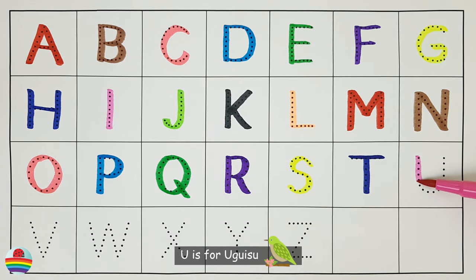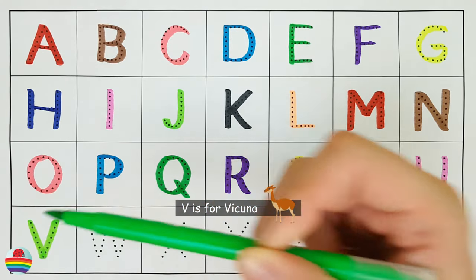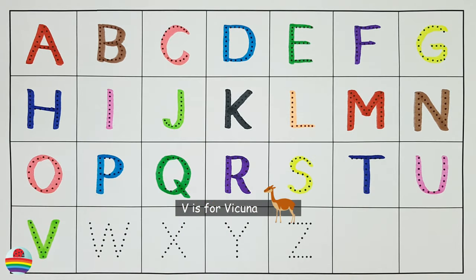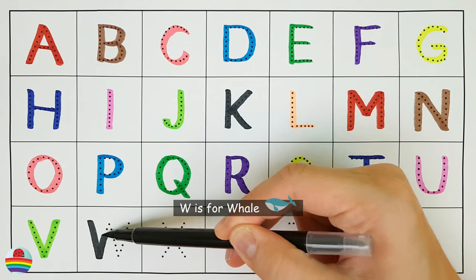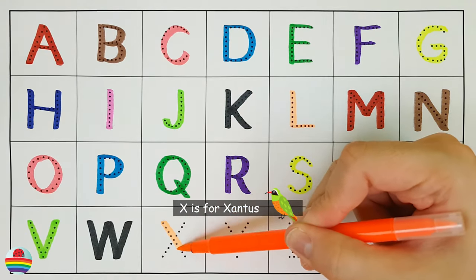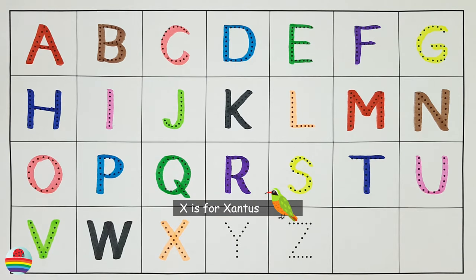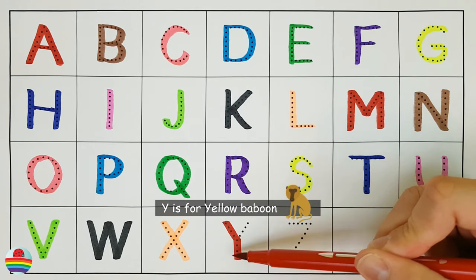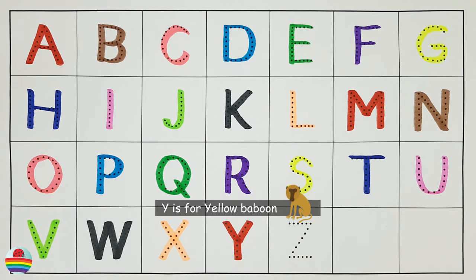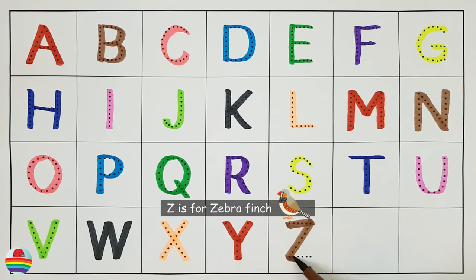U. U is for ugisu. V. V is for vicuna. W. W is for whale. X. X is for xantis. Y. Y is for yellow baboon. Z. Z is for zebra finch.